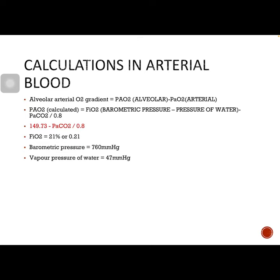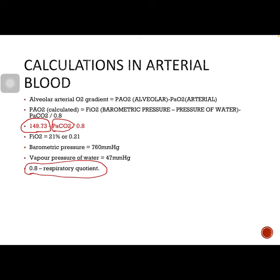FiO2 (oxygen concentration in the atmosphere) is 21% or 0.21. Barometric pressure is 760 mmHg, vapor pressure of water is 47 mmHg, and the respiratory quotient is 0.8. The difference between barometric pressure and vapor pressure of water, multiplied by FiO2, gives a value of 149.73. PaCO2 from the ABG report is then used: subtracting PaCO2 divided by 0.8 from 149.73 gives the partial pressure of oxygen in the alveoli. The AA gradient equals PAO2 minus PaO2. Healthy animals have an AA gradient between 0 and 10.